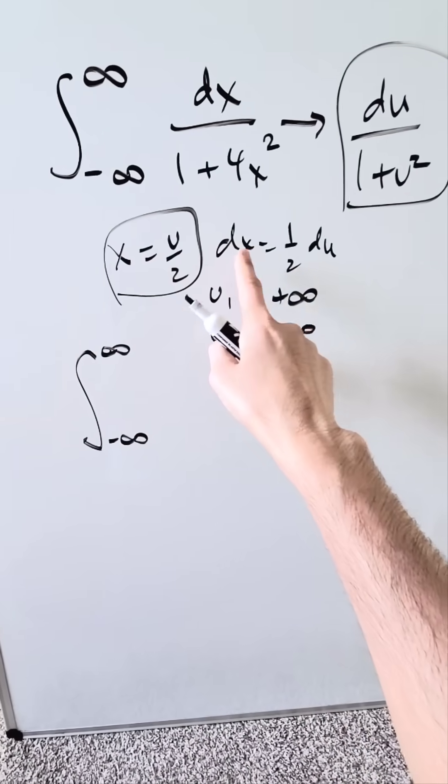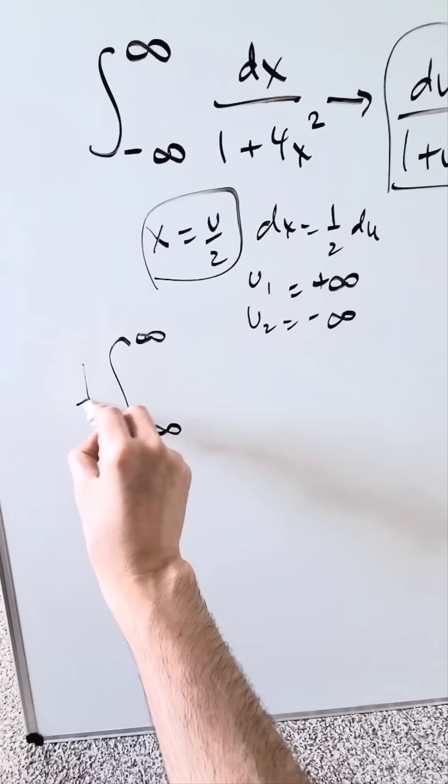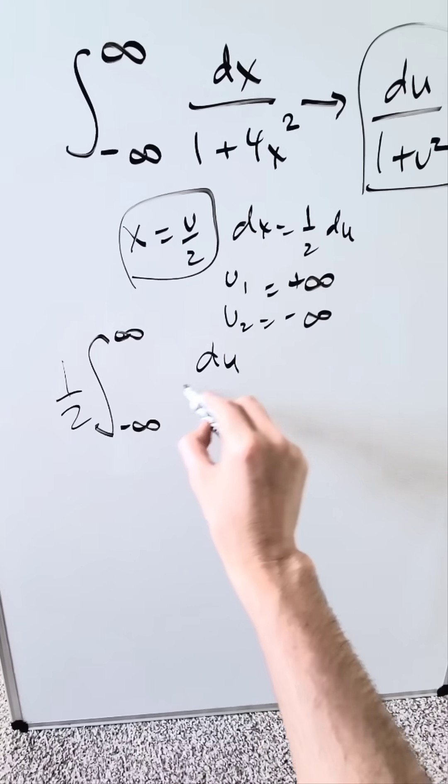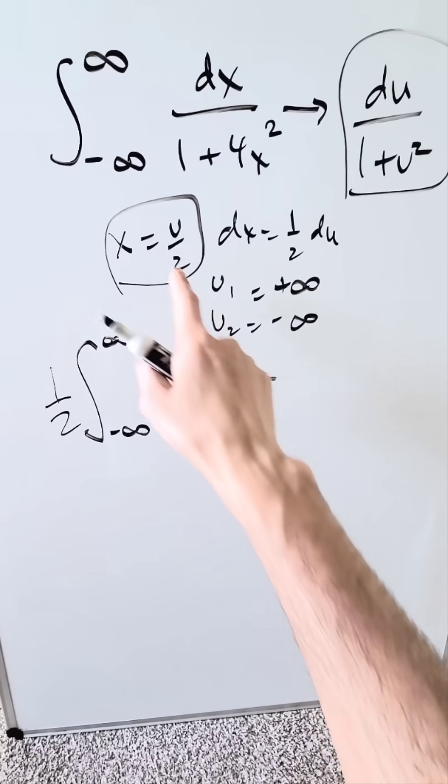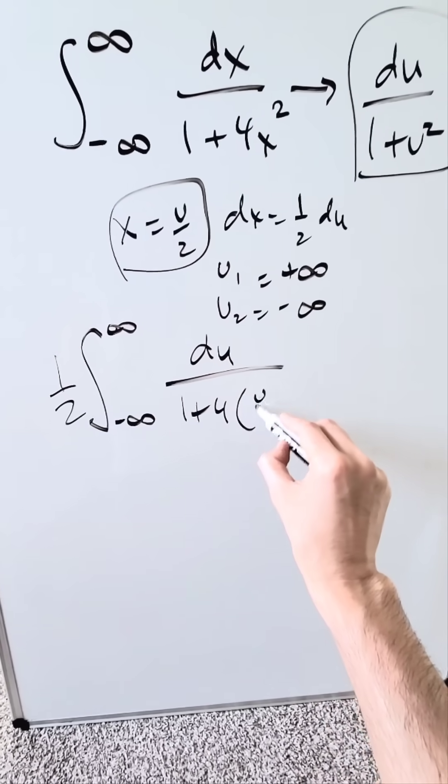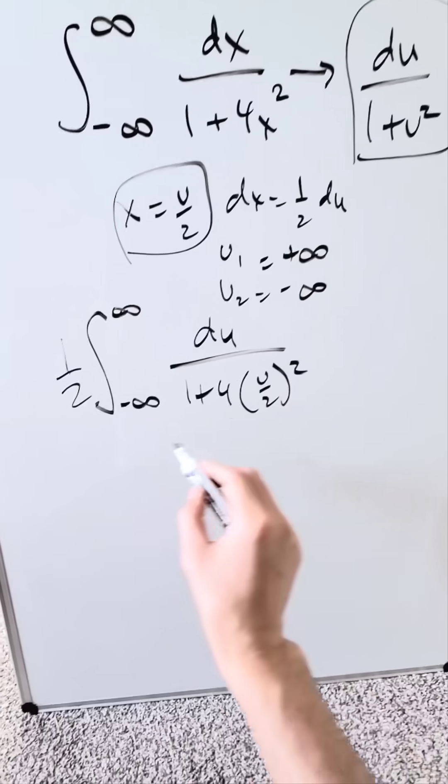But bring in your substitutions. I have dx equal to 1 over 2 du. I'll bring the 1 over 2 out. I have a du here in the numerator. In the denominator, I have 1 plus 4 times x. x here is equal to u over 2. That's your new substitution.